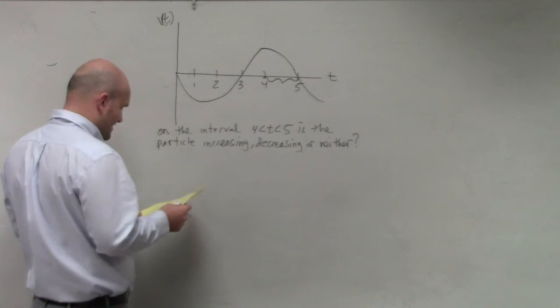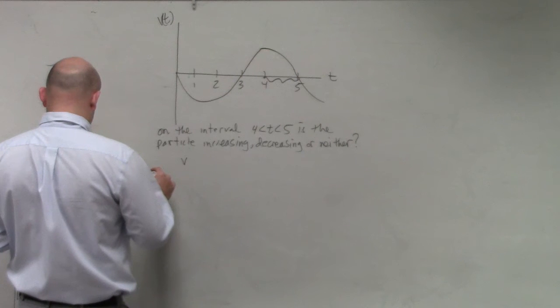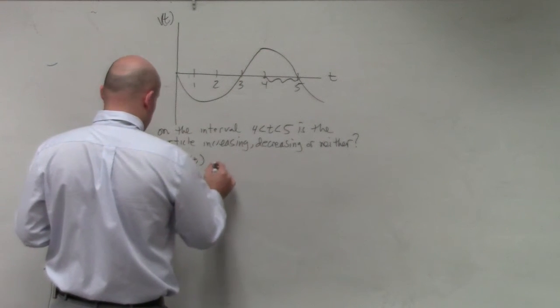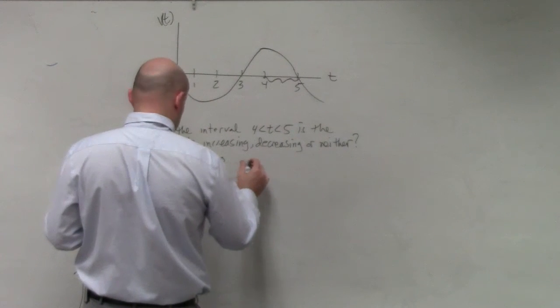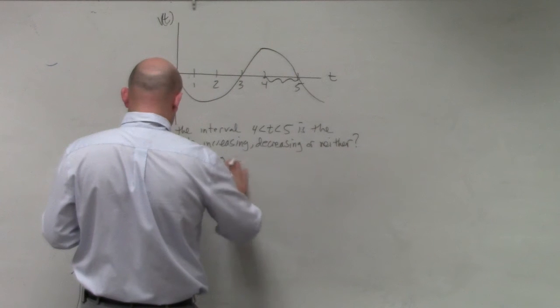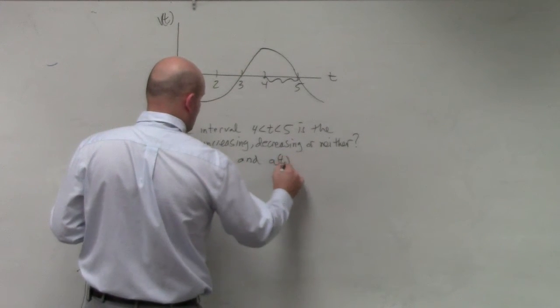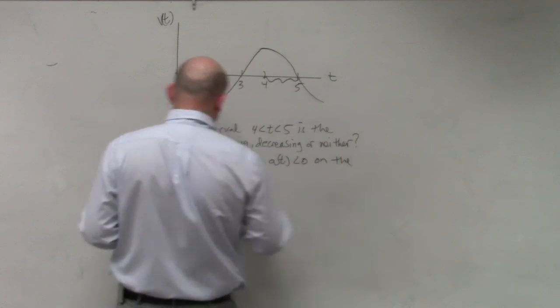So a couple things that we would want to write down, or at least how we'd write that down, is you could write that v(t) is going to be greater than 0, and a(t) is less than 0 on the interval.